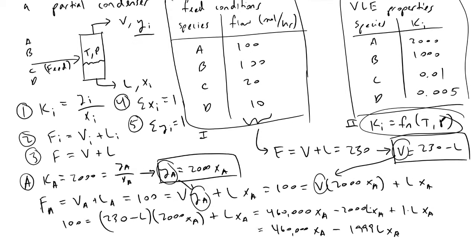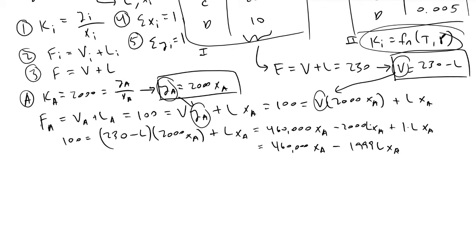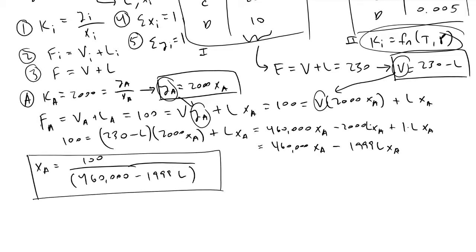When we solve for x_a in this equation, we find that x_a equals 100 divided by (460,000 - 1,999 times L).